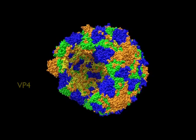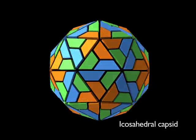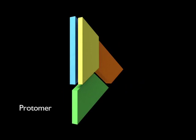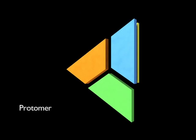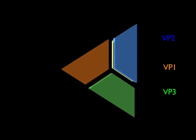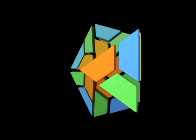The structure of the capsid is icosahedral and the proteins are arranged in protomers. Protomer is the basic building block of the poliovirus capsid. Each protomer contains one copy each of VP1, VP2, VP3 and VP4. This arrangement facilitates the stability of the virion.